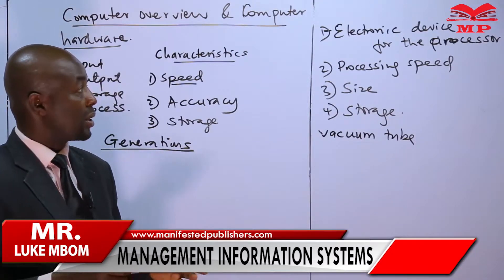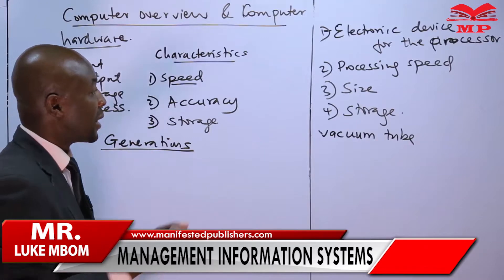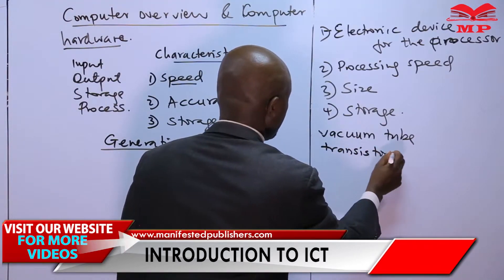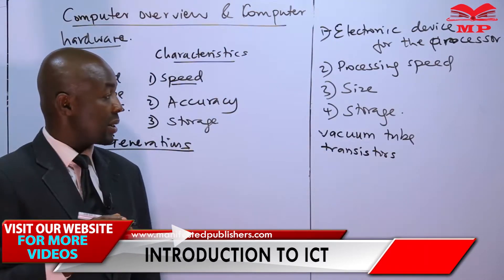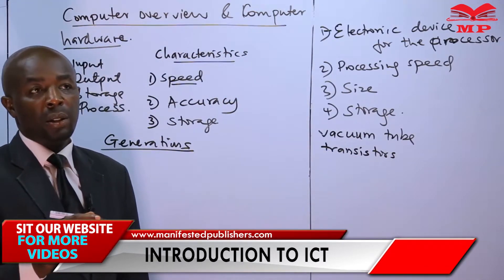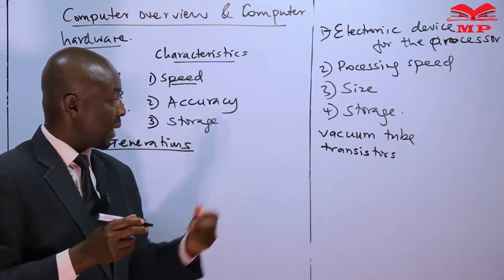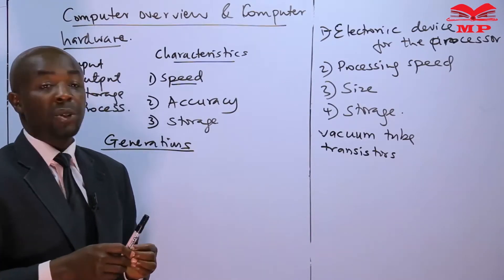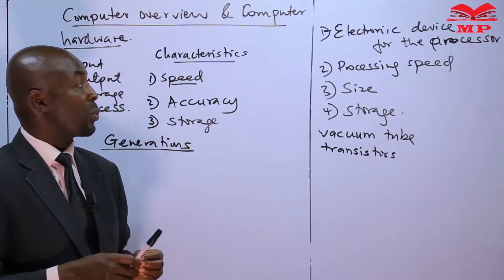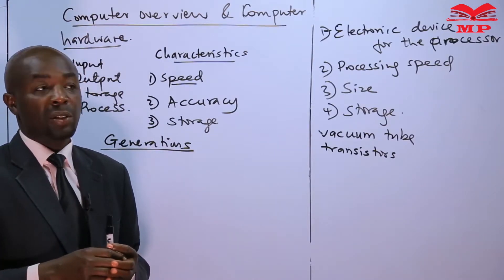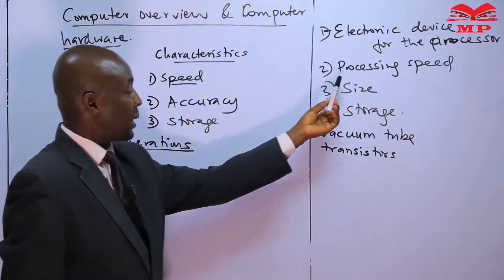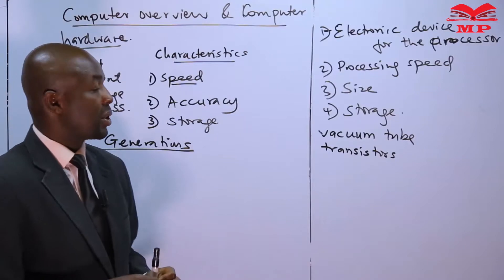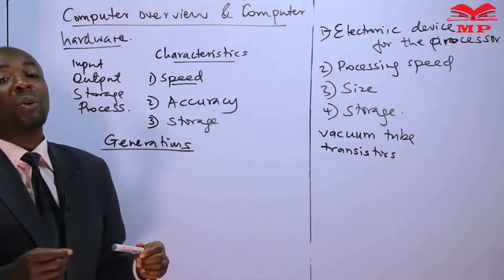For the second generation computers, they used transistors — they did not use the vacuum tubes. Transistors are electronic devices that have still been used to date, but if you compare them with vacuum tubes, they are smaller than the vacuum tubes. That is why second generation computers were smaller than the first generation computers. Because of the electronic device they used, they had better processing speeds and better storage capabilities than the first generation computers.